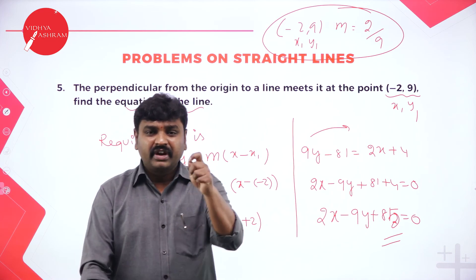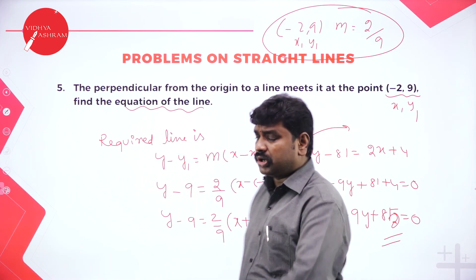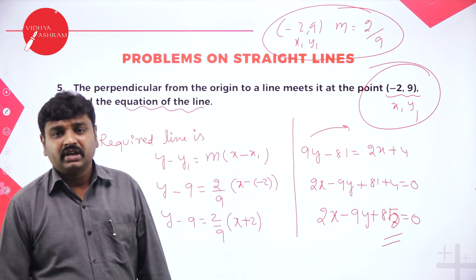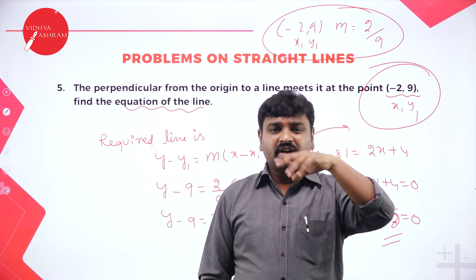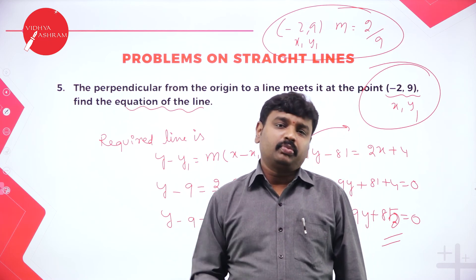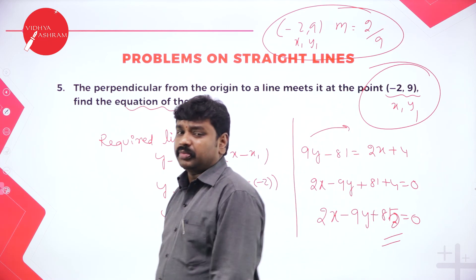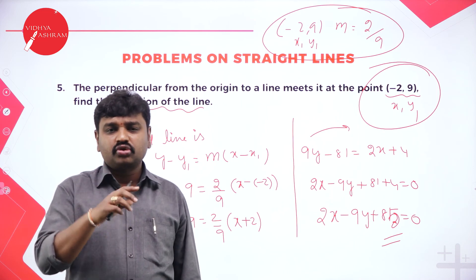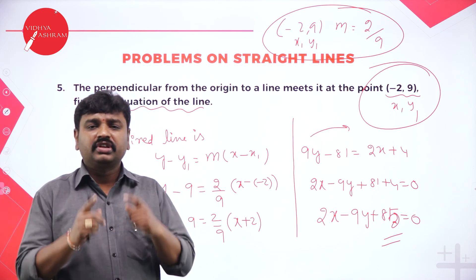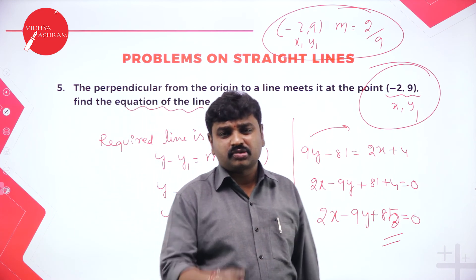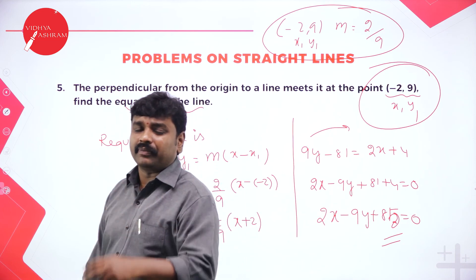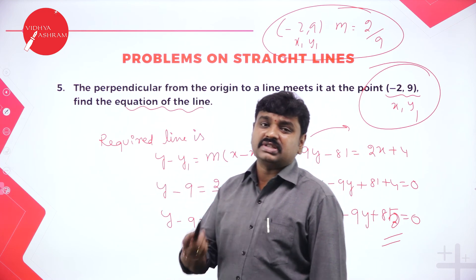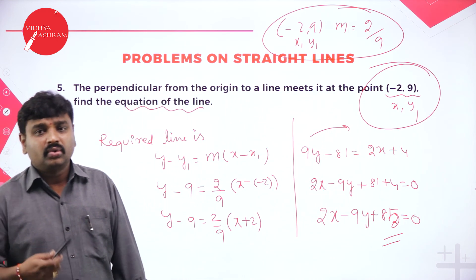In this problem, the line passed through a known point and slope was found indirectly using the perpendicularity condition. Find slope of OP, then use M2 equals minus 1 by M1. So far in today's session we used two forms: point slope form y minus y1 equals m into x minus x1, and intercepts form x by a plus y by b equals 1.